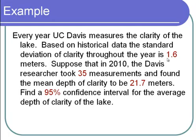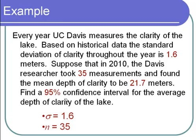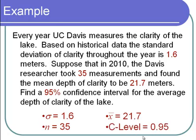Let's go through the cast of characters. 1.6 is the standard deviation for the entire year — we're assuming we know the population standard deviation, so sigma equals 1.6. 35 was the sample size, so n equals 35. 21.7 is the sample mean, so x-bar equals 21.7. And 95% is the C-Level. Notice that 1.6 is not just any standard deviation — it's the population standard deviation for the whole year. Now let's go to our calculator.